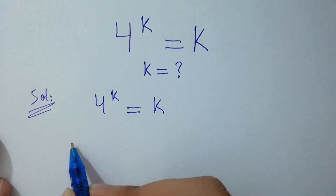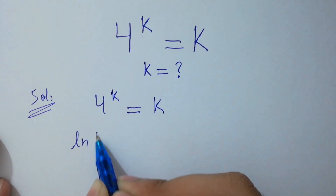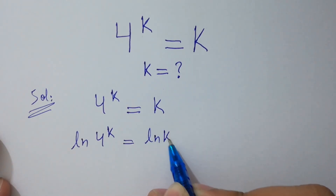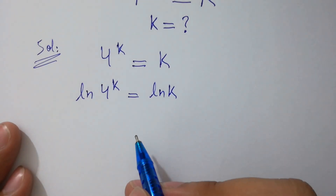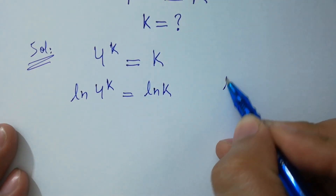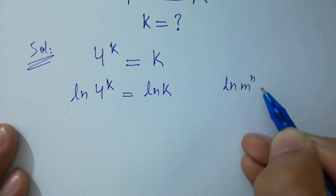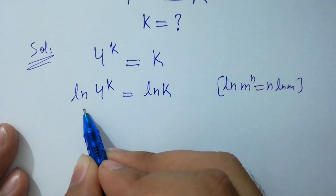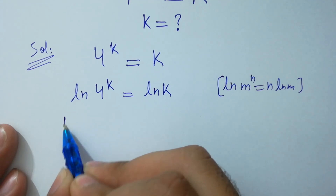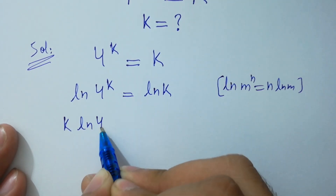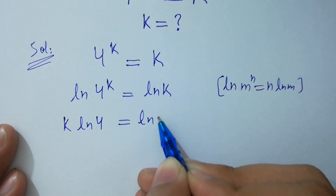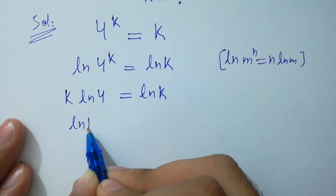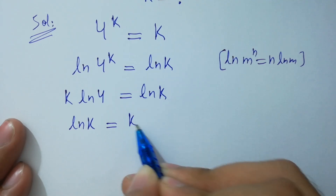Take natural log on both sides. Ln of 4 to the power k equals ln k. Since ln m to the power n equals n times ln m, so ln 4 to the power k equals k ln 4, which equals ln k.